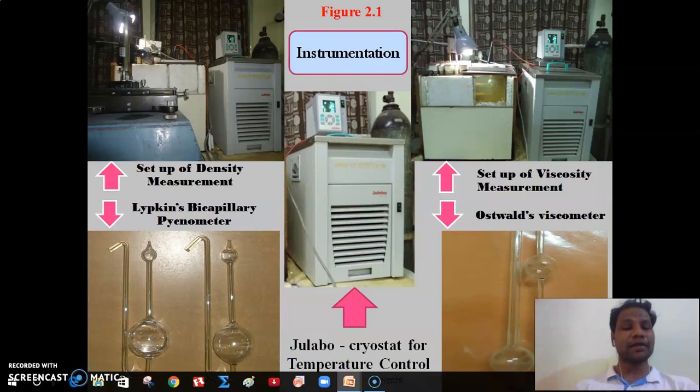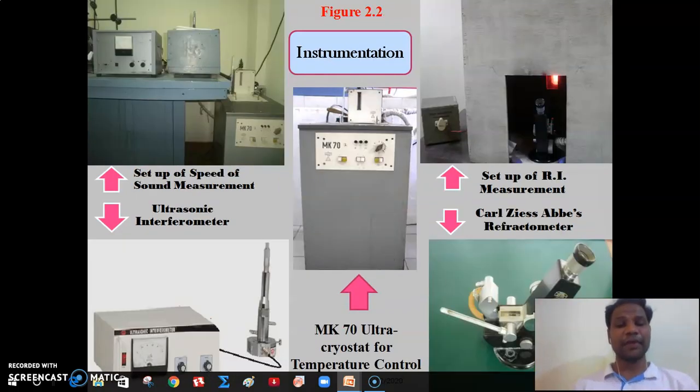These are the snapshots of density and viscosity measurements. During the measurement, Julabo cryostats have been used to maintain temperature constant up to 0.002K in the experimental bath which maintains temperature constant up to 0.1K in the cryostat. Also we have used MK70 Ultra Cryostat for the measurements of speed of sound and refractive indices which maintains temperature constant up to 0.1K.